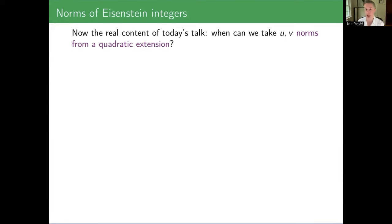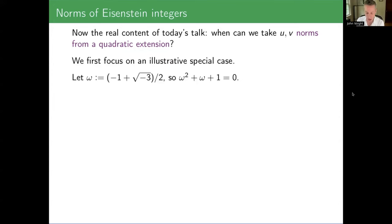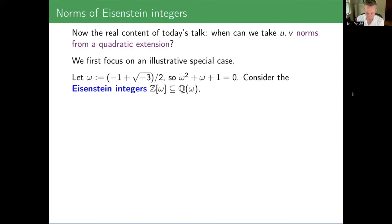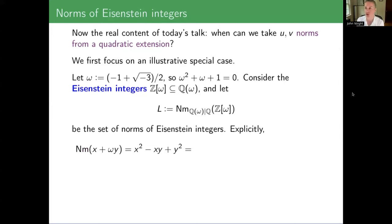It is a lot easier for an integer to be a norm from a quadratic extension rather than being a square on the nose. There are a lot more norms than there are squares, so this should be easier to satisfy somehow. To motivate this a little further, I want to focus on an illustrative special case. I'm just going to take this quadratic extension to be adjoining a cube root of unity. So let ω be this primitive cube root of unity.